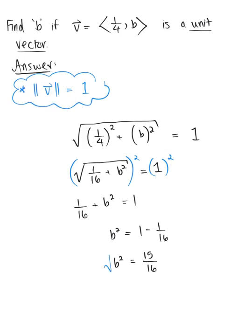And now taking the square root of both sides, we are left with b is equal to plus or minus. So I'm going to distribute that square root through to the numerator here. So plus or minus the square root of 15, and then the square root of 16 leaves us with 4. So b is going to be equal to plus or minus the square root of 15 by 4.